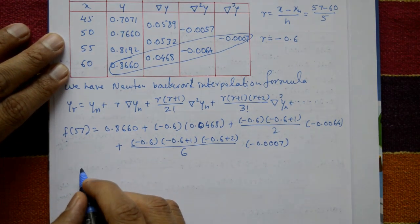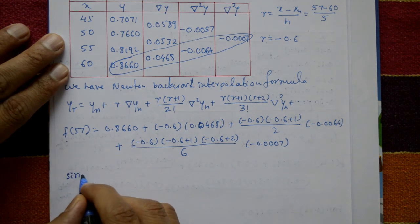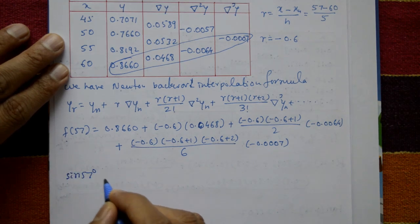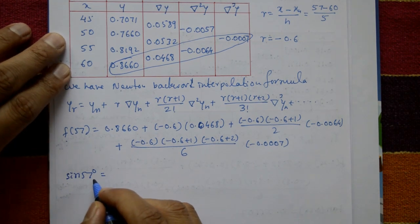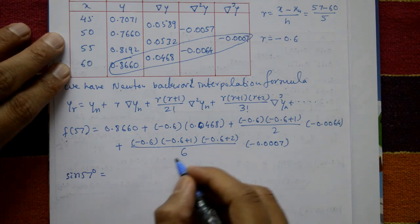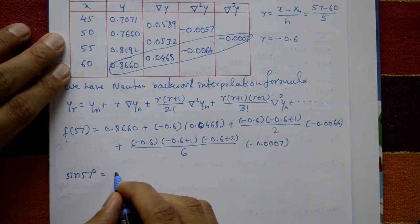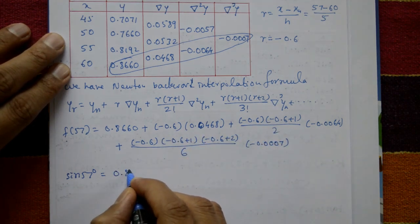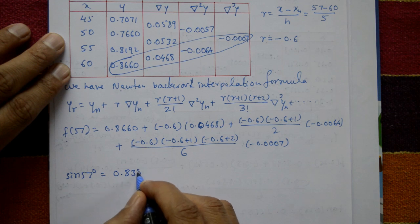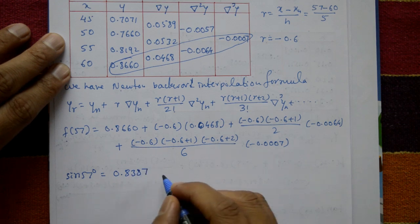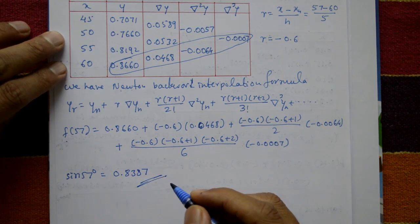Using a calculator, sin 57° = 0.8387. This is the required solution.